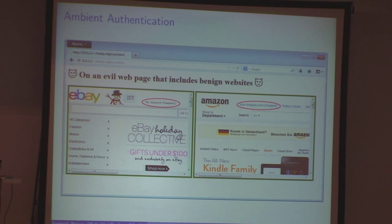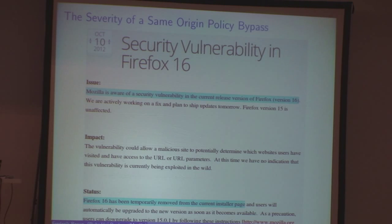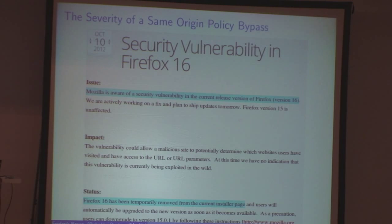If things can go wrong, you can imagine that exposing banking credentials or something similar is kind of a big deal. There's a very nice example of what can go wrong with the same origin policy. I'm quoting here a blog post from the Mozilla security blog from October last year. Mozilla is aware of a security vulnerability in the current release of Firefox version 16, and further down it says Firefox 16 has been temporarily removed from the current installer page.